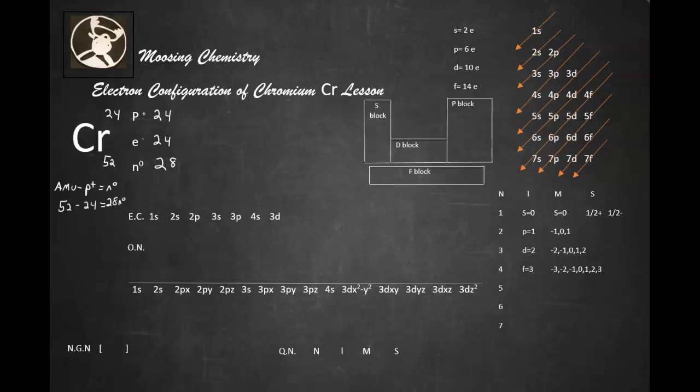Before we get into electronic configuration, it's important to remember that the S-subshell can hold two electrons, the P-subshell can hold six electrons, the D-subshell can hold 10 electrons, and the F-subshell can hold 14 electrons. We're going to use the Aufbau principle, which is the diamond rule, and we're going to follow these red arrows down until we run out of electrons.